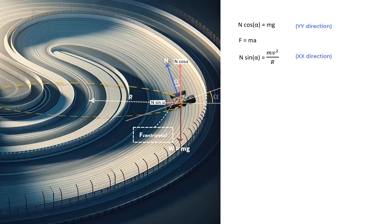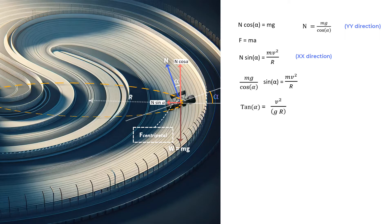Now, if we write N in this equation as Mg upon cos α and substitute it in this equation, what we get is Mg upon cos α into sin α is equal to MV squared upon R, or tan α is equal to V squared upon GR. And if you want to, you can write α as tan inverse of V squared upon GR.